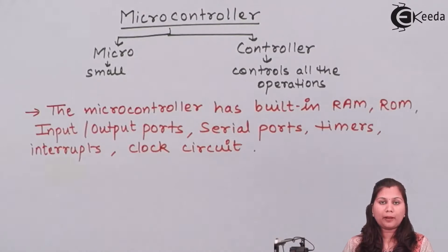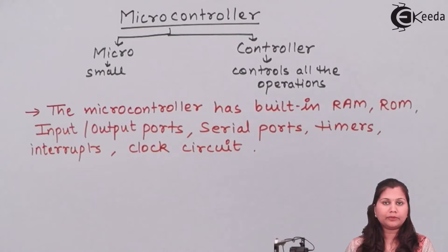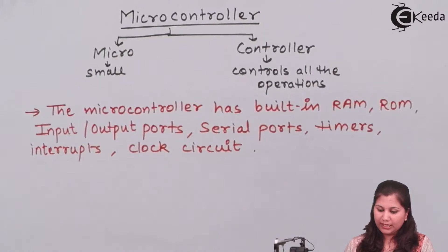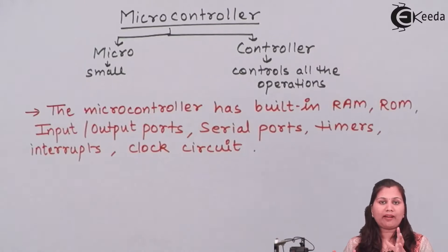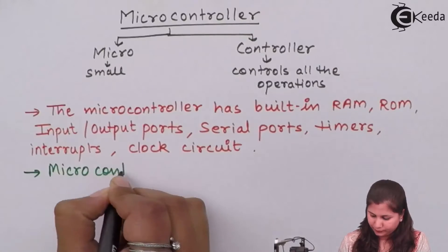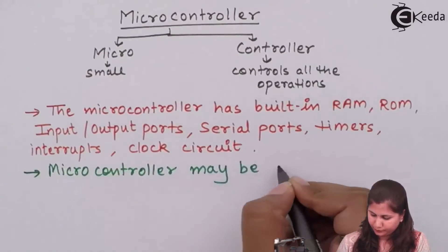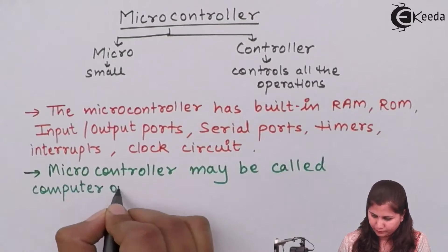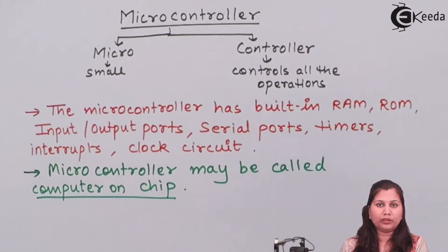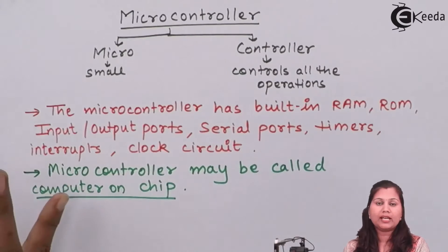Talking about its components, a microcontroller will have built-in RAM, ROM, input-output ports, serial ports, timers, interrupts and clock circuits — all present in the microcontroller. So we can say that a microcontroller is nothing but an on-chip computer. All the devices of the computer are embedded on a single chip — that is called a microcontroller.